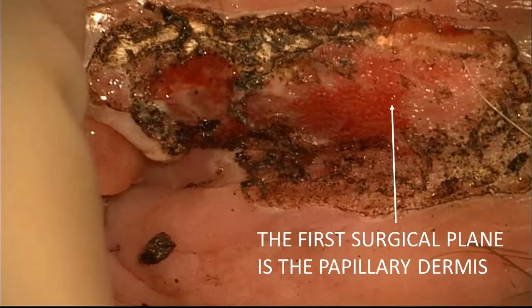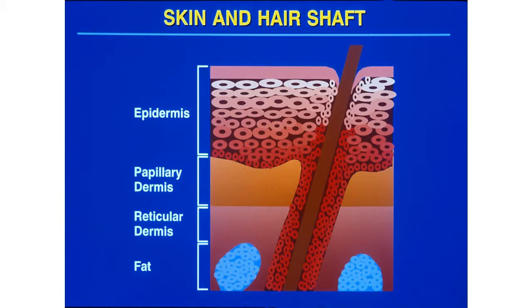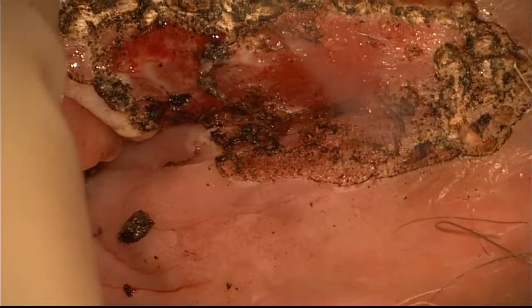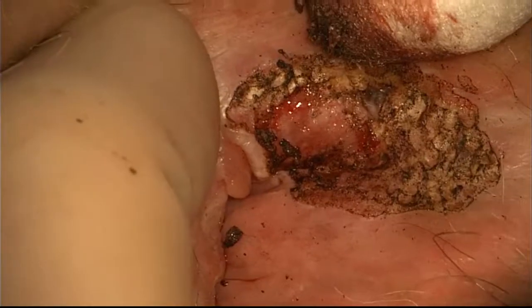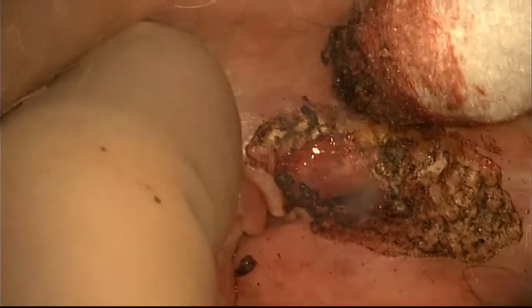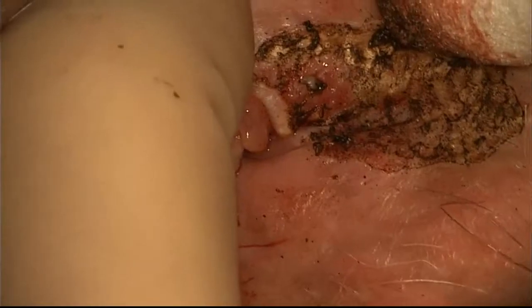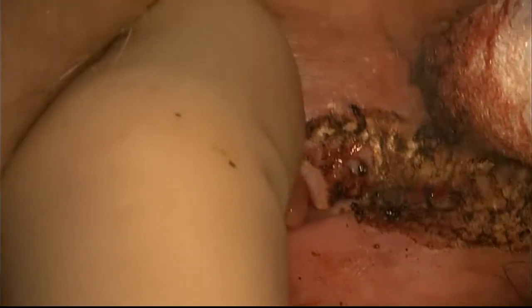After the first pass of the laser, the char is removed and the first surgical plane is the papillary dermis. The epidermis is lifted off and we are at the papillary dermis. Some of the tissue may have little buds of remaining PAIN, so I will pass the laser again over the papillary dermis layer to reveal the reticular dermis layer. I will still not be into the subcutaneous fat.